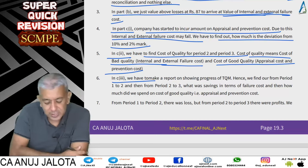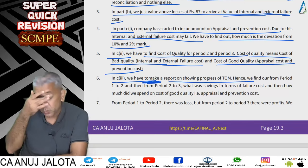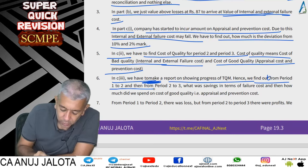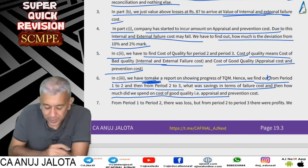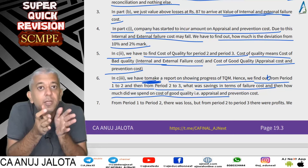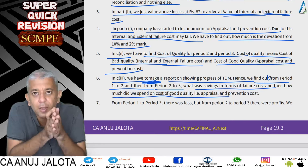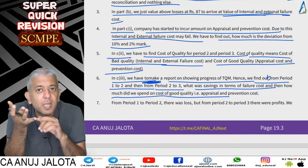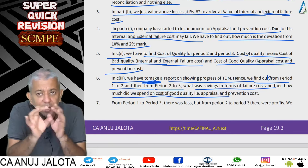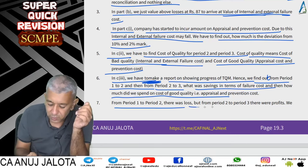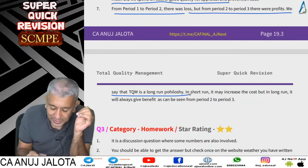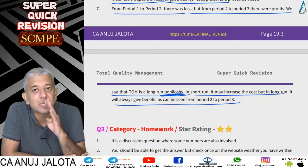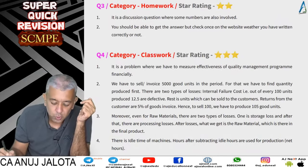In Part C3, prepare a report showing TQM progress: find savings in failure costs from Period 1 to 2 and Period 2 to 3, then deduct appraisal and prevention costs. Internal and external failure costs are 'cost of bad quality'; appraisal and prevention are 'cost of good quality.' From Period 1 to 2 there was a loss, but Period 2 to 3 showed profits. TQM is a long-run philosophy — in the short run costs may rise, but in the long run benefits emerge.